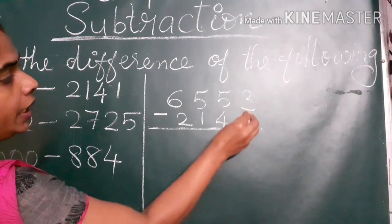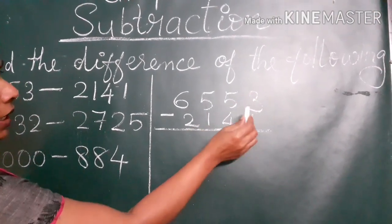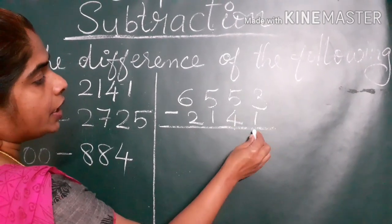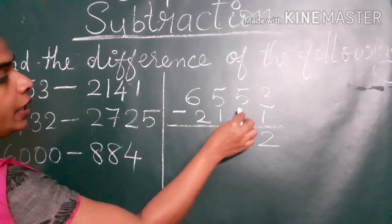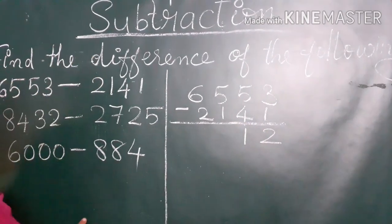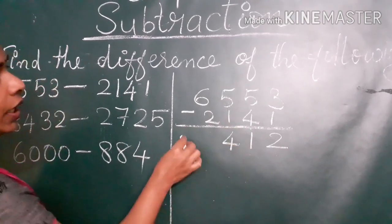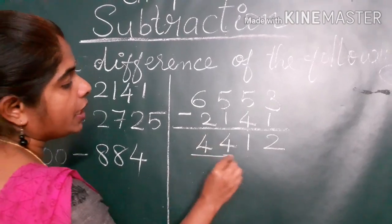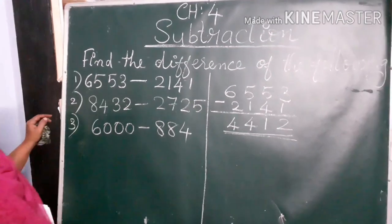Here you see: 3 minus 1. Always the first number should be bigger. 3 minus 1, the answer will become 2. So here, 5 and 4 — when we subtract 4 from 5, the answer is 1. So 5 minus 1, the answer is 4. 6 minus 2, the answer is 4. So this is the answer.